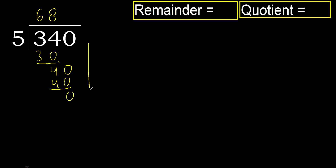Subtract to get 0. There is no next digit, therefore finish. 340 divided by 5 equals 68.